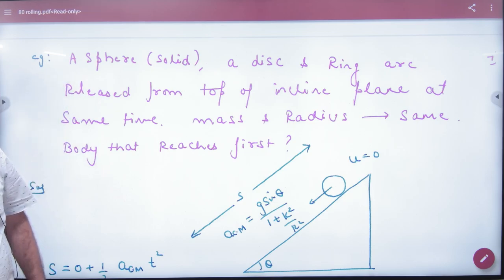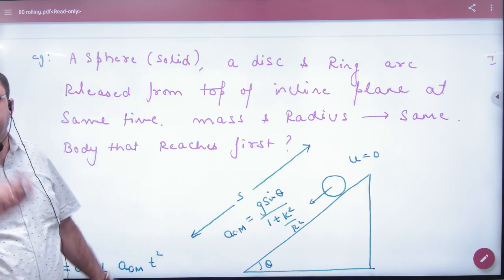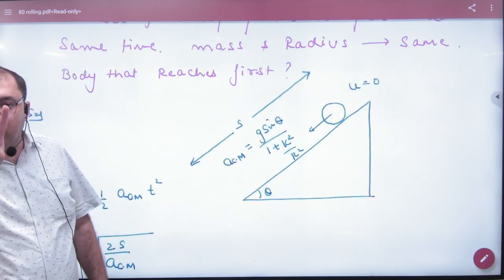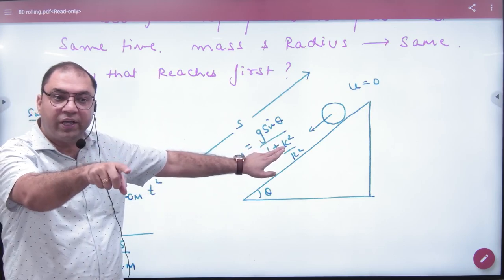Why not? Because the acceleration of the center of mass, which is equal to any body. Three bodies of k²/R² are different. So the acceleration of the three is different.